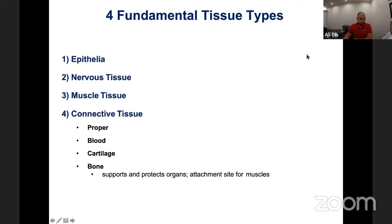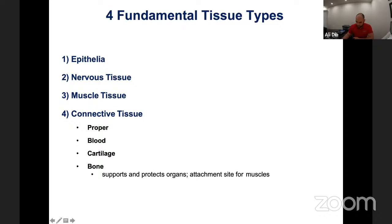So just to go over the four fundamental tissue types again — we spoke about them before — we have the epithelia, so the skin of the body, the nervous tissue, muscle tissue, and connective tissue. Last time we dived into bone tissue a little bit more, which is one of our connective tissue types. Today we're going to be diving into muscular tissue as well as some proper connective tissue — the fascia of the human body — and we're going to talk about connective tissue plasticity.